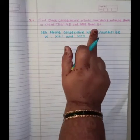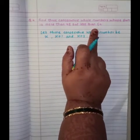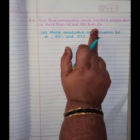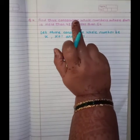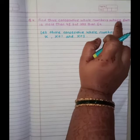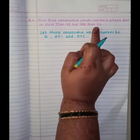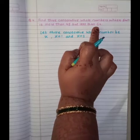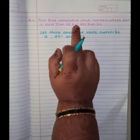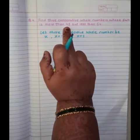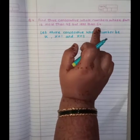Now students, if you read this question, you will come to know here they mentioned 2 conditions. 3 consecutive whole numbers whose sum is more than 45 but less than 54. So we will think first condition, then we will see the second one.